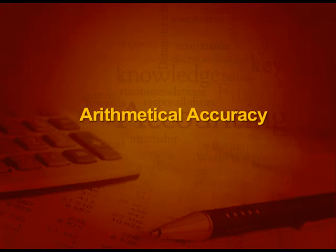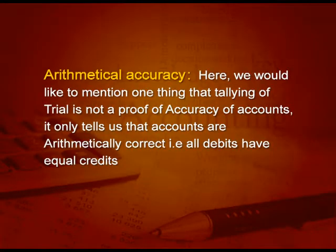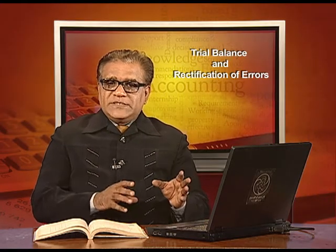On the first point of arithmetical accuracy, it should be noted that the tallying of a trial balance is not proof of complete accuracy of the accounts. It just tells you that accounts are arithmetically correct, meaning all debits have equal credits and all debits and credits have been posted equally.